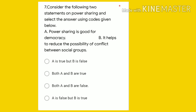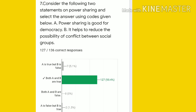Seventh question: consider two statements on power sharing — A) power sharing is good for democracy, B) it helps to reduce the possibility of conflict between social groups. The right option is both A and B, and 127 students gave the right answer, which is 93.4 percent.